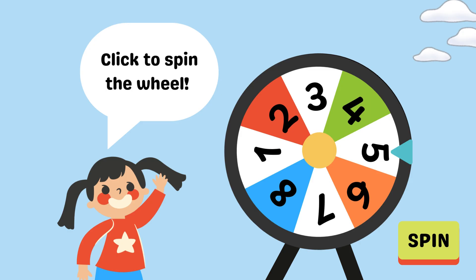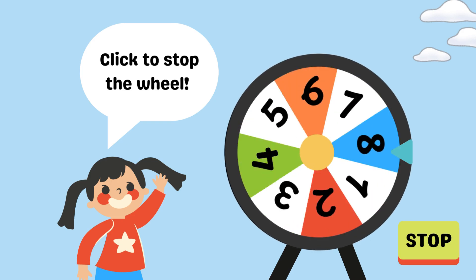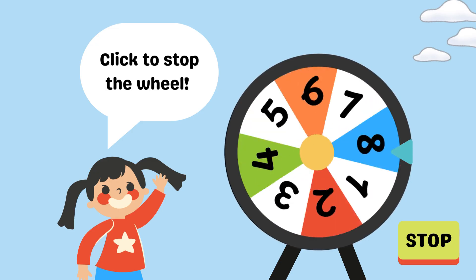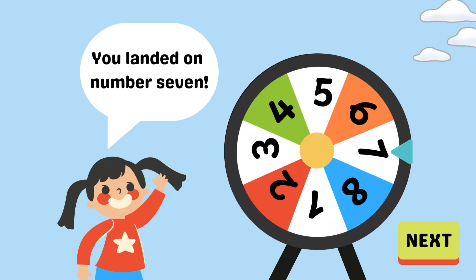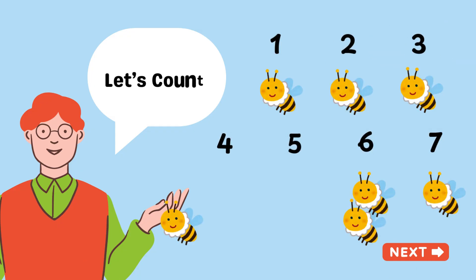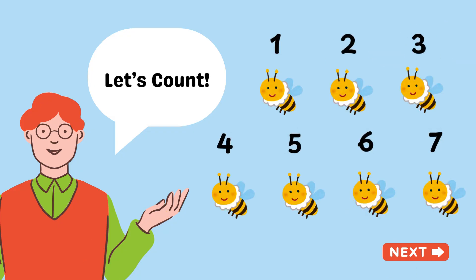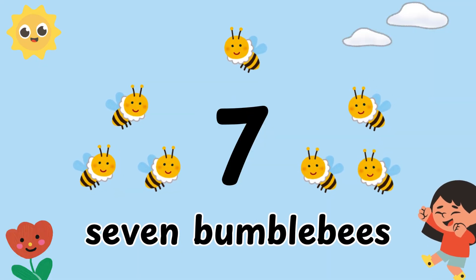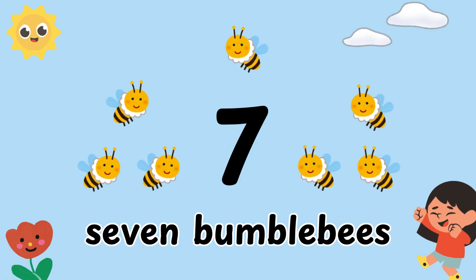Next, click to spin the wheel. Again, click to stop the wheel. This time, you landed on number 7! Example, 7 bumblebees are here.